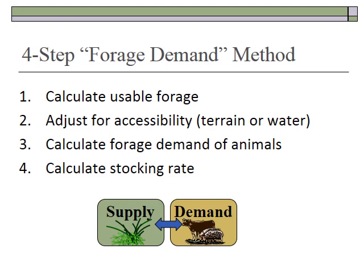In summary, keep your eye on the ball and don't get lost in the math. All you need is to calculate the usable forage, determine how much of that forage is accessible to your herd based on your experience and use of pastures, calculate the forage demand per animal based on the type and weight of animals, and then compare supply and demand.